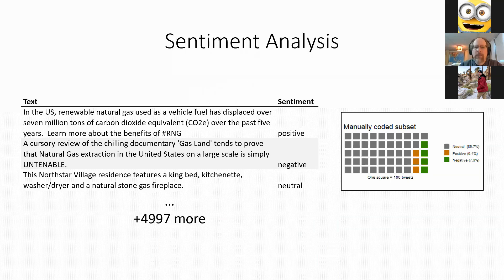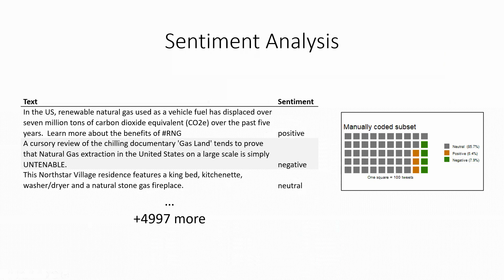For manual classification I reviewed 5,000 different tweets, asking for each one whether it shows a preference for the continued use or expansion of natural gas as an energy source, then scoring it positive, negative, or neutral. I'd also like to thank Piero, who looked over some tweets himself as a second reviewer. From the manually coded subset, the waffle plot shows that overwhelmingly the tweets were neutral. There were slightly more negative tweets than positive, though the ratio was fairly even.